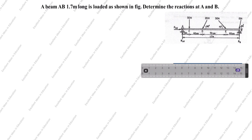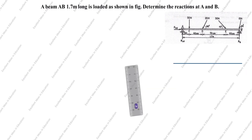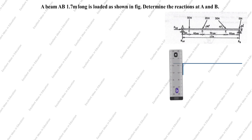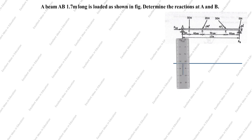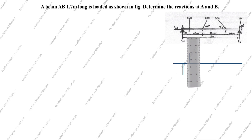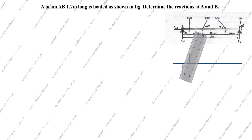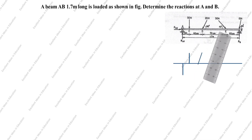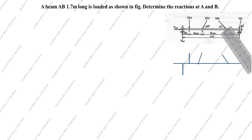Now we will draw the vertical direction and mark the reactions. The C reaction acts downward. The D reaction is inclined, so we draw the inclined force. The E force is also inclined, and we draw that inclined force. The last force is also inclined.